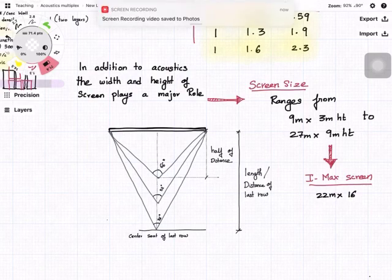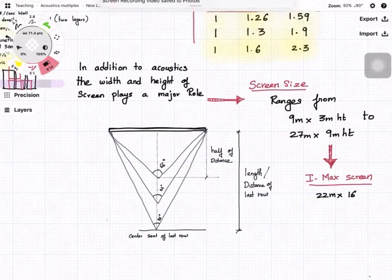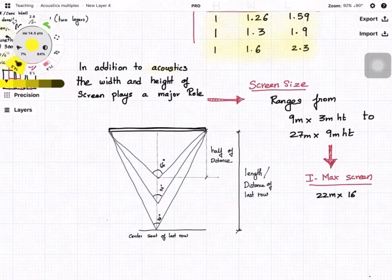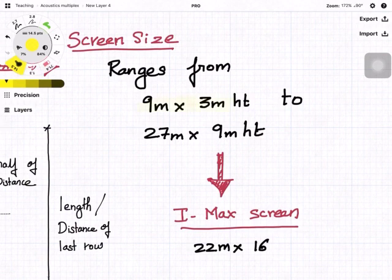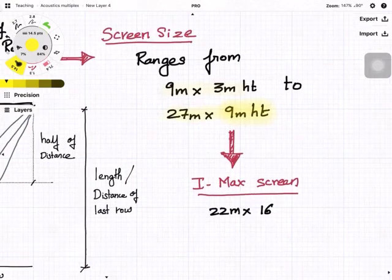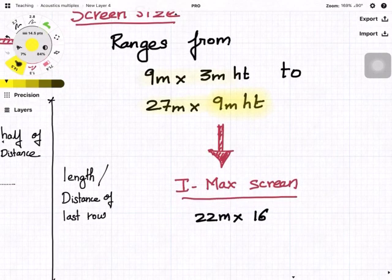In addition to acoustics, screen size plays a major role in defining the size of the theatre. Screen size ranges from 9m x 3m to 27m x 9m height — 9 meter height is almost three storeys. If you are going to design an IMAX theatre, the standard screen size is 22 meter by 16 meters.